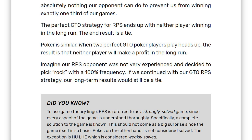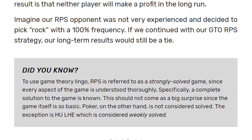Given all of this, the GTO strategy for rock paper scissors ends up with neither player winning in the long run — the result is a perfect tie. Poker is similar: when two perfect GTO poker players play heads up, neither player makes a profit in the long run. RPS is referred to as a strongly solved game since every aspect is thoroughly understood. Poker, on the other hand, is not considered solved — the exception being heads-up limit hold'em, which is considered weakly solved.